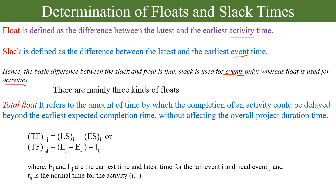The first one is total float. It refers to the amount of time by which the completion of an activity could be delayed behind the earliest expected completion time without affecting the overall project duration. Mathematically, total float Tf equals Ls minus Es, the difference between the latest start time and the earliest start time. One more formula: Tf equals Lj minus Ei minus Tij, where Lj is the latest time at head event j, and Ei is the earliest time at tail event i.